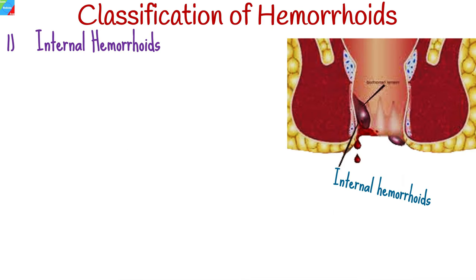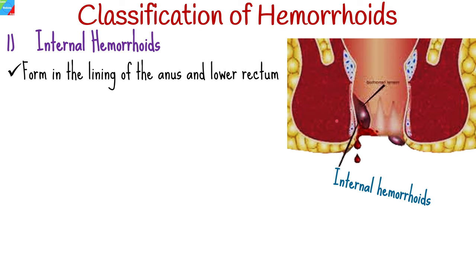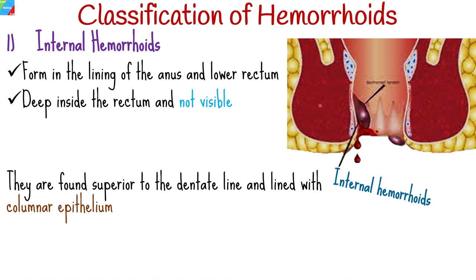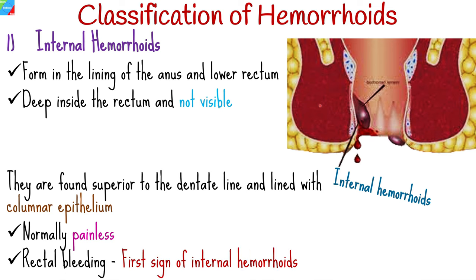There are two types of hemorrhoids. The first type is internal hemorrhoids, which form in the lining of the anus and lower rectum. Internal hemorrhoids are deep inside the rectum and not visible from outside. They are found superior to the dentate line and lined with columnar epithelium. Normally, they are painless.